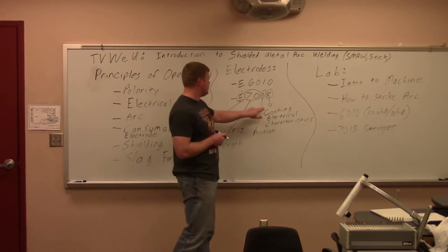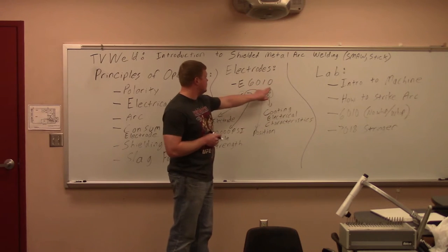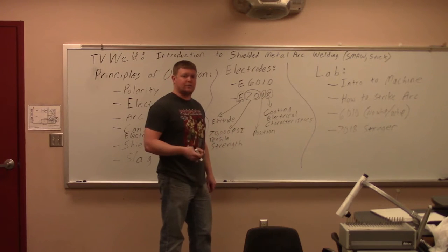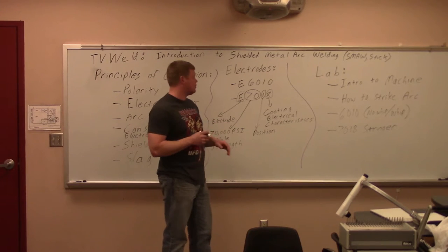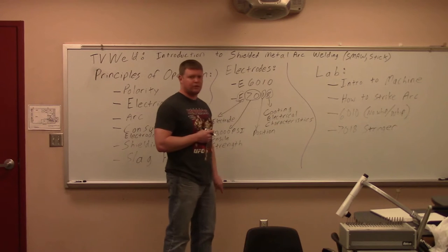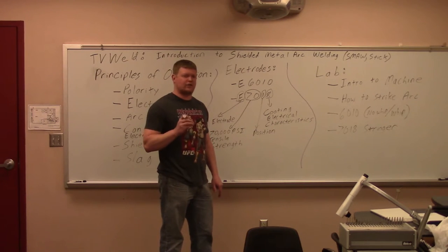And then last but not least, the fourth number on the electrode is going to be your coating and your electrical characteristics. So the 6010, it's a zero, it's a cellulose-based flux, so it's basically plant matter. So if you get it too hot, it will burn up. And then the eight is a rutile-based mineral flux for 7018, which provides a lot thicker of a slag.